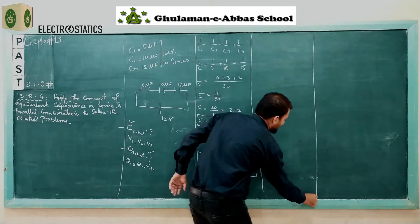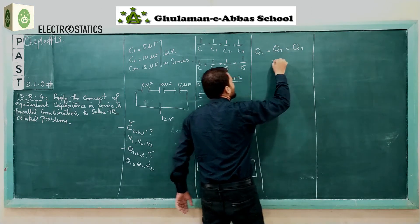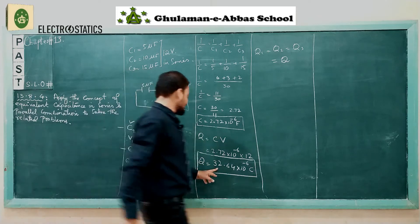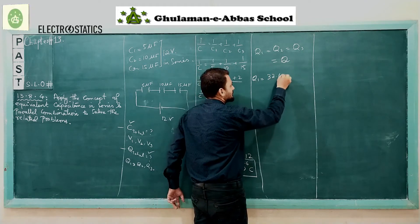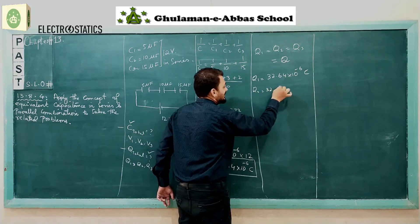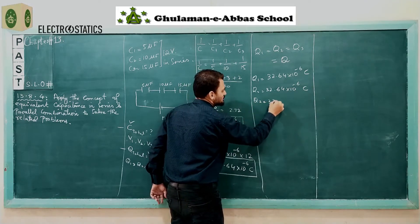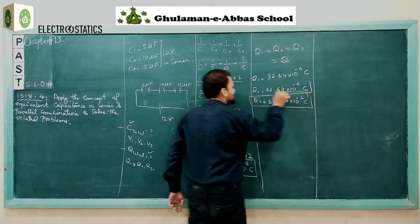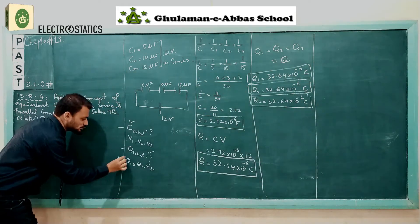We know that in series combination the charges are equal, so Q1 = Q2 = Q3 = Q, which is the total charge. Therefore Q1 = 32.64 × 10⁻⁶ coulombs, Q2 = 32.64 × 10⁻⁶ coulombs, and Q3 = 32.64 × 10⁻⁶ coulombs. We have now calculated the total charge and the individual charge on each capacitor.